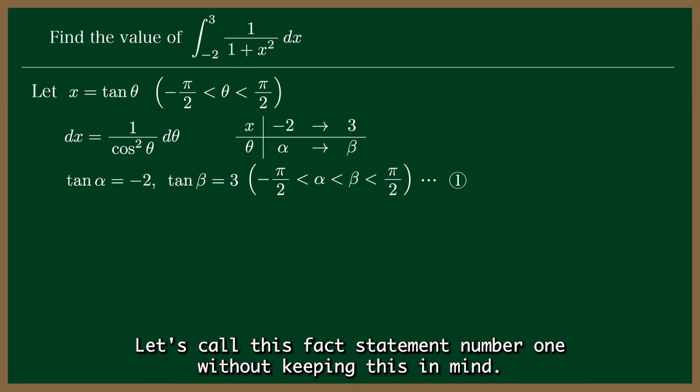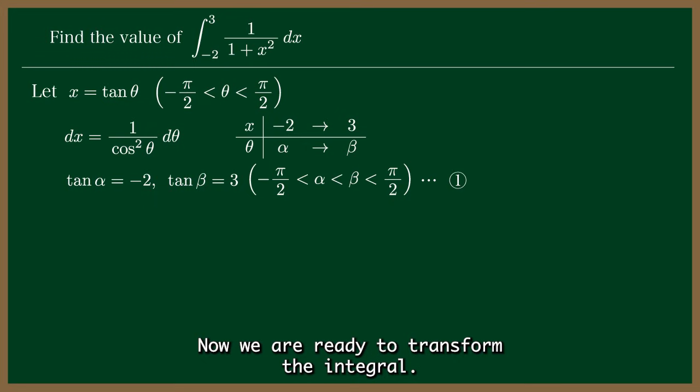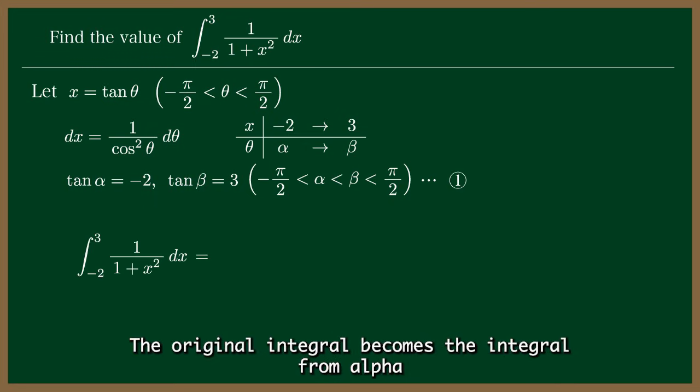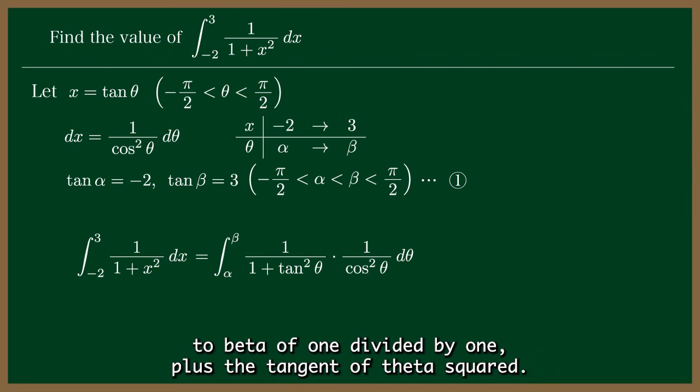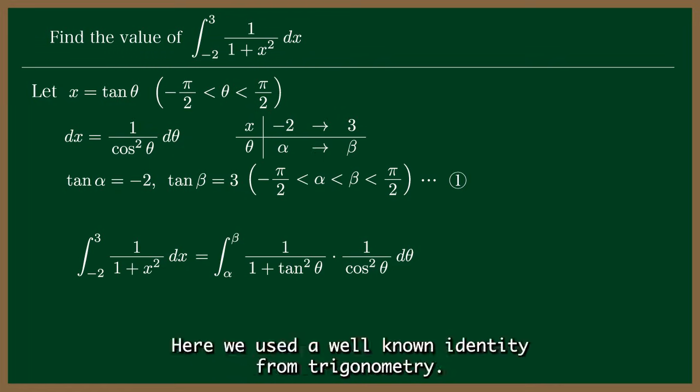Without keeping this in mind, the problem cannot be solved correctly. Now we are ready to transform the integral. The original integral becomes the integral from alpha to beta of 1 divided by 1 plus the tangent of theta squared multiplied by 1 divided by the cosine of theta squared with respect to theta.